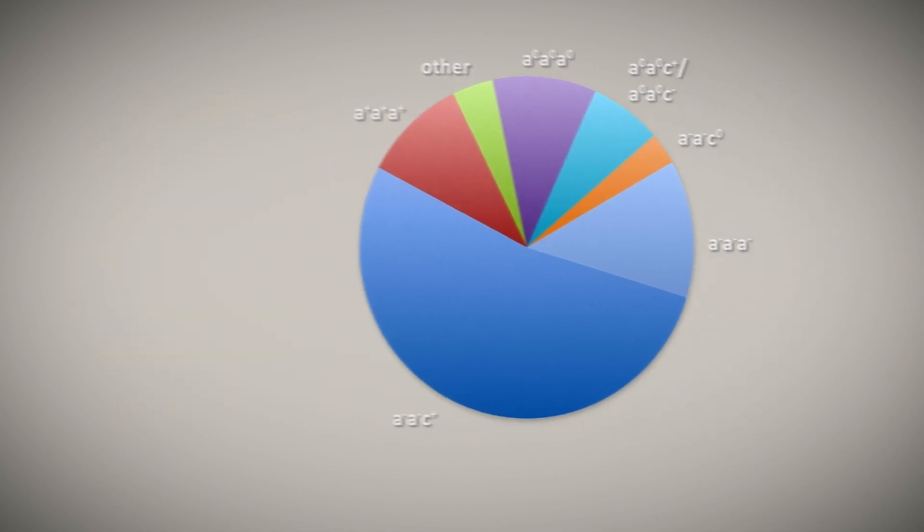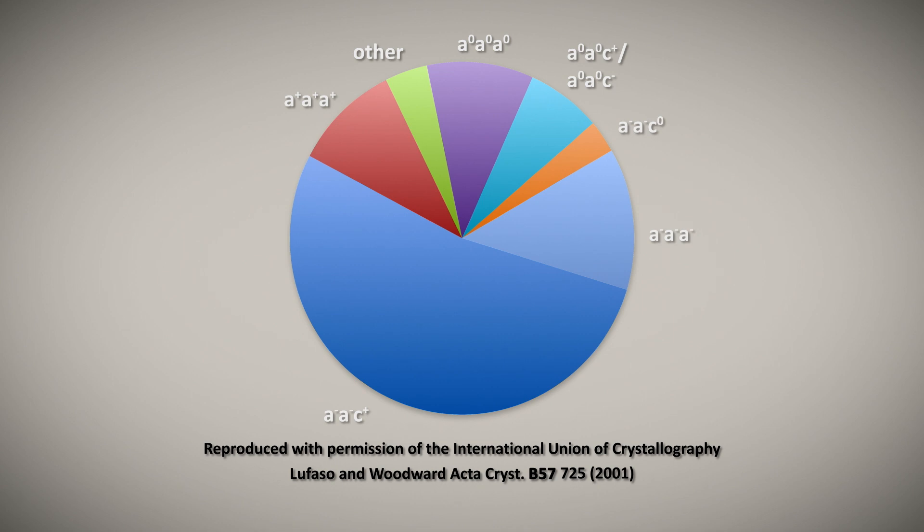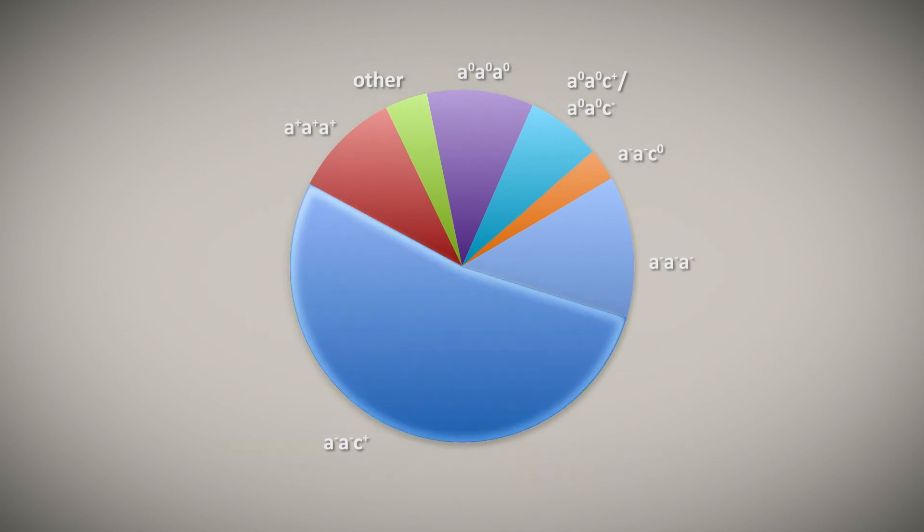This pie chart shows the distribution of rotation patterns among known perovskites as of 2001. The largest slice, which takes up just over half the pie, is the PNMA structure. Most perovskites have the PNMA structure as their ground state, or lowest energy structure.